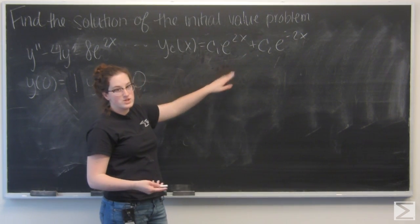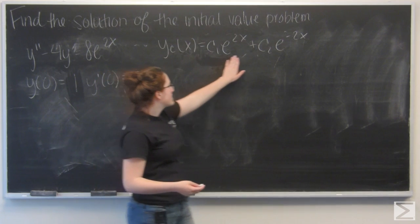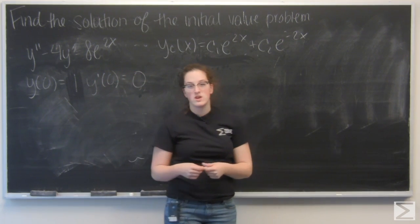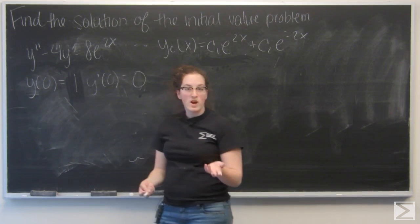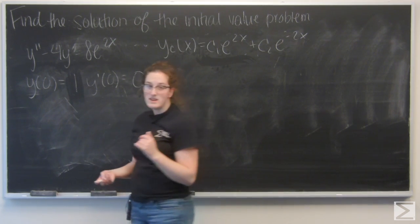That's a solution to the homogeneous equation, so e to the 2x can't be the particular solution. But I can multiply it by x. So I'm going to say yp equals some constant a times x e to the 2x.